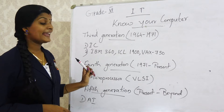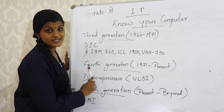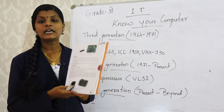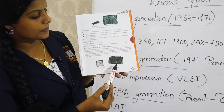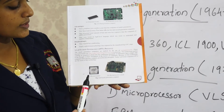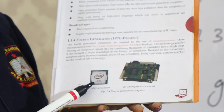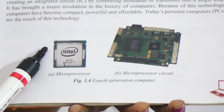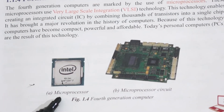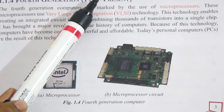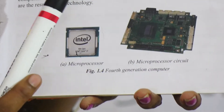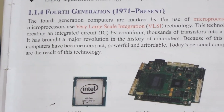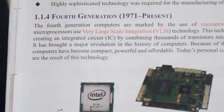The main component used in the fourth generation is the microprocessor. When you look in the textbook, the picture of the microprocessor is clearly given. The Intel Corp label itself indicates fourth generation. This generation also uses VLSI technology — that is, Very Large Scale Integration technology.